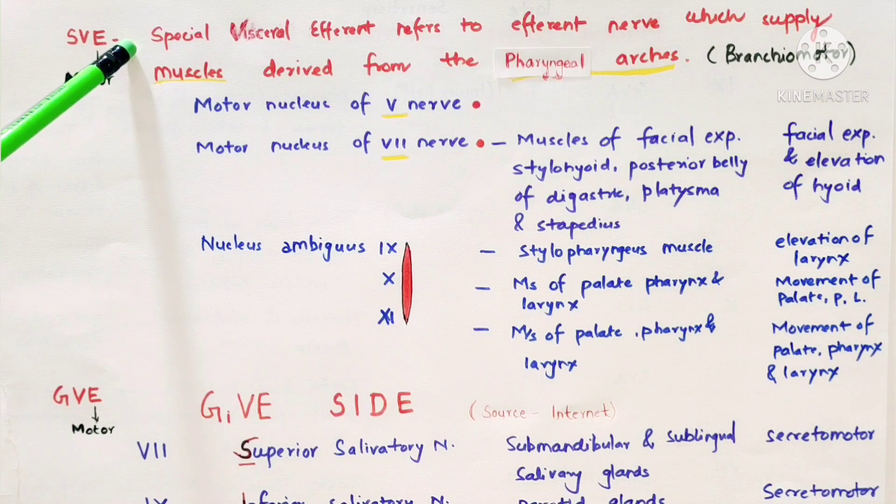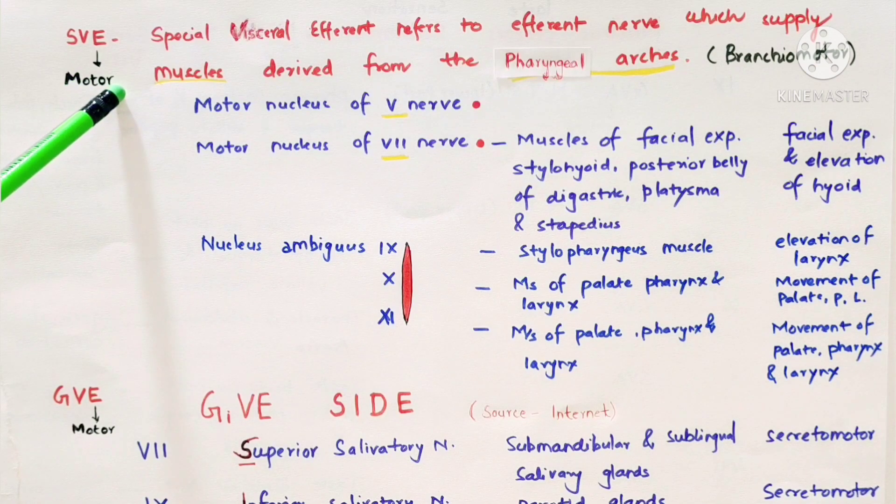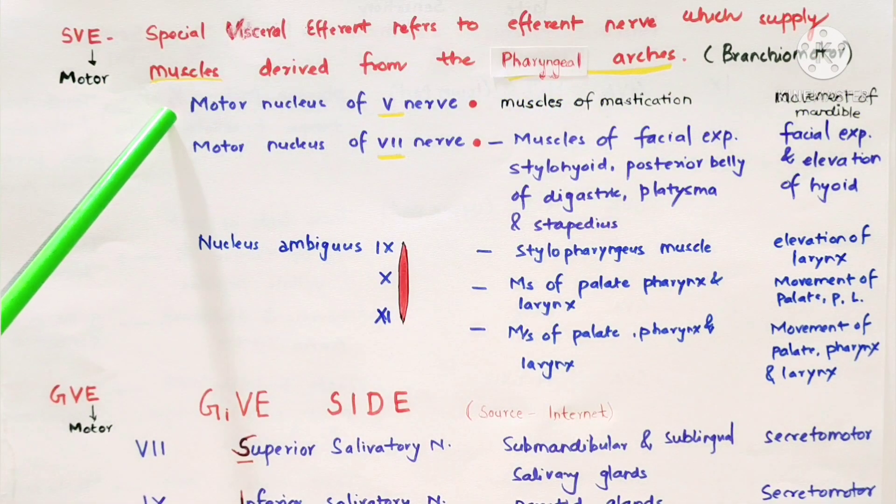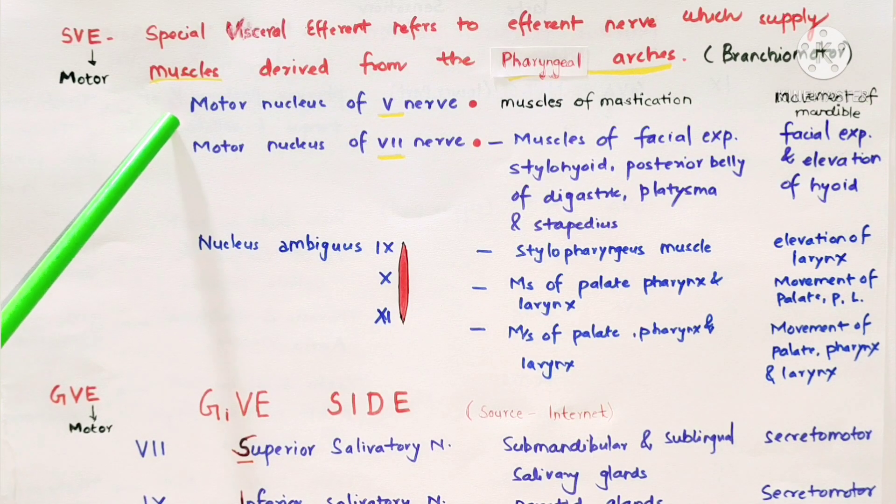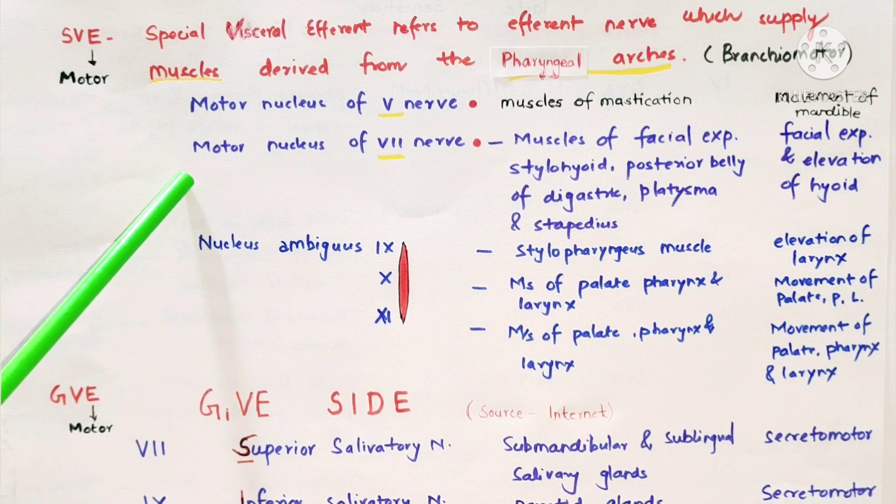Special visceral efferent fibers refers to visceral nerve which supplies muscles derived from pharyngeal arches. Motor nucleus of trigeminal nerve distributes to muscles of mastication and functions in movement of mandible.